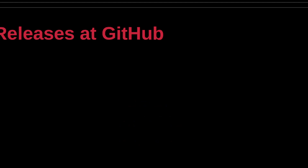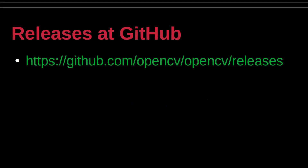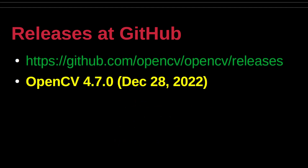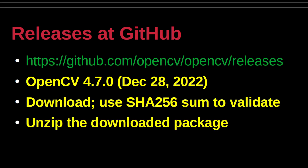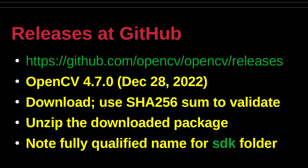The OpenCV SDK for Android is published with each release in Android Studio. The latest OpenCV release for Android is available at the GitHub site listed on the slide. Download the zip archive and validate it with the published SHA-256 sum. Unzip the archive and make a note of the fully qualified name for the SDK subfolder. This value is required to import the module into an Android Studio project.